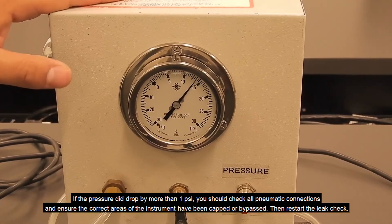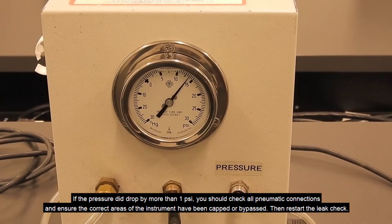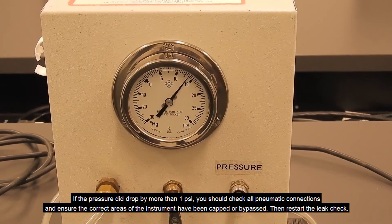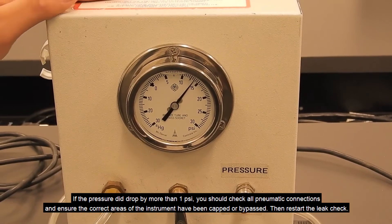If the pressure has dropped by more than one psi, then you'll need to check all the pneumatic connections, ensure the correct areas of the instrument have been capped or bypassed, and then restart your leak check.